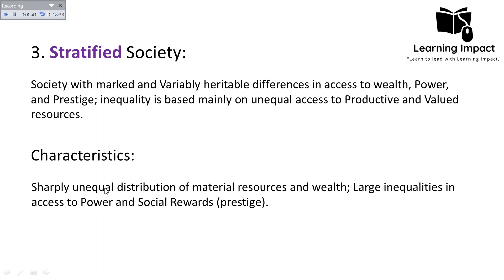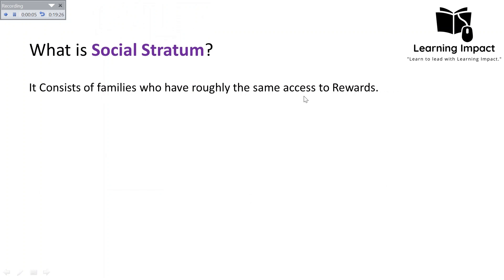Characteristics of stratified society include sharply unequal distribution of material resources and wealth, and large inequalities in access to power and social rewards. The society in which we are living today is a stratified society. There is even global stratification — the most industrialized nations, the industrializing nations, and the least industrialized nations. Stratification has arisen not just within societies but also among nations, leading to the concept of global stratification.